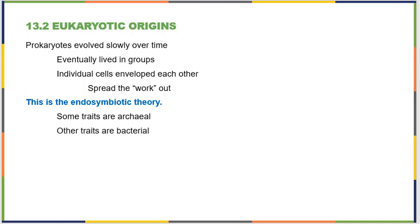It appears that individual cells eventually developed interdependence to spread the work out. If you live in a house with 18 chores that need to be done, it's way easier to accomplish those chores if six people tackle three tasks each. That's kind of how the endosymbiotic theory worked — certain organisms developed processes to do certain functions better than others, so if you could live inside the same membrane as someone with better traits, you could divide tasks and everyone would benefit.